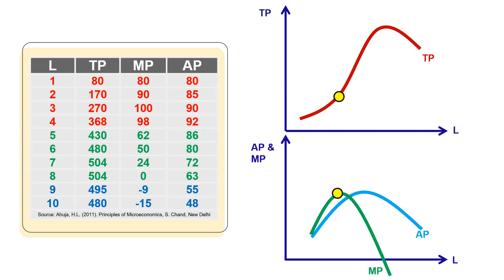Now see point A, that is the third unit of labor. Up to three units of labor, marginal production increases — you can see in the table it increases from 80 to 90 to 100. After this point, marginal production starts declining. So this is known as the point of inflection.